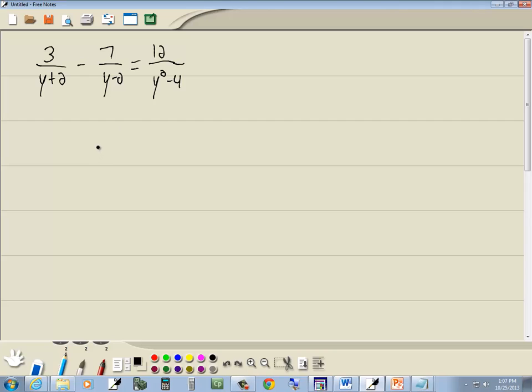Step 1 in solving rational equations is to factor all your denominators. Now, y plus 2 we can't do anything with, y minus 2 we can't do anything with, but y squared minus 4 is the difference of two squares. I'm going to do it over here on the side.